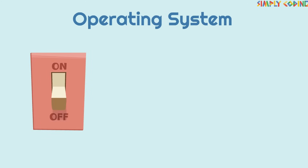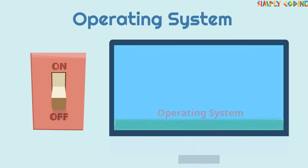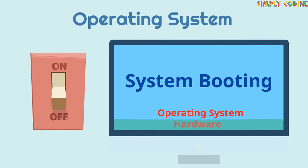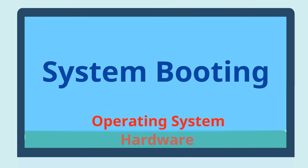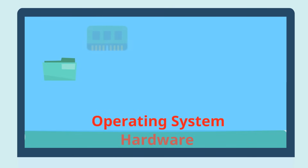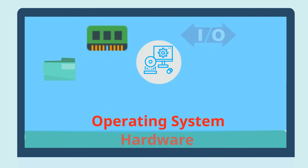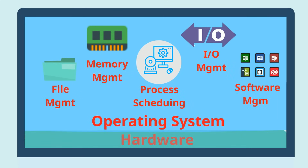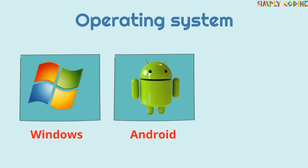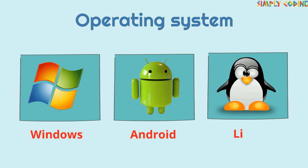When you put the computer on, the operating system helps you to start up or boot up your system. Operating systems are a set of programs which manage the computer hardware and provide common services such as file and memory management, process scheduling, and managing other devices and software. Examples include Windows, Android, and Linux.